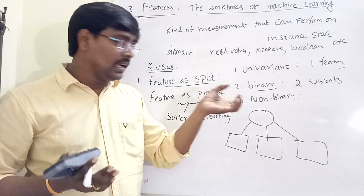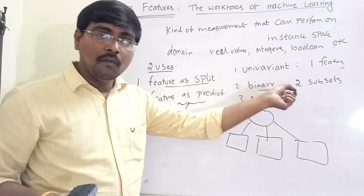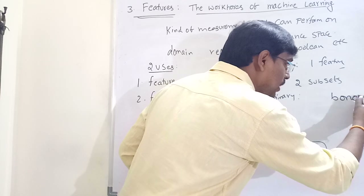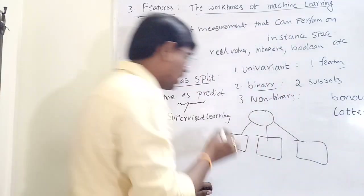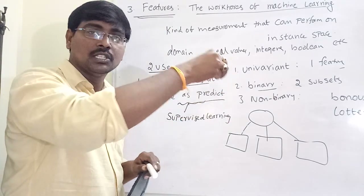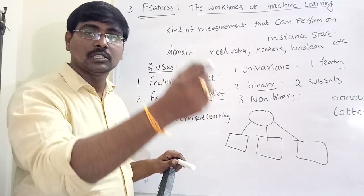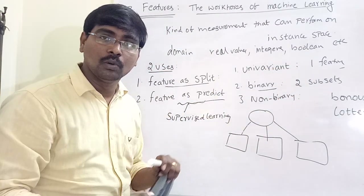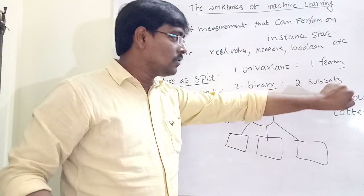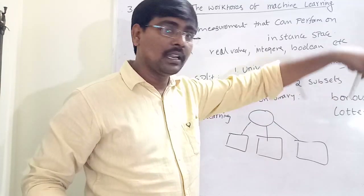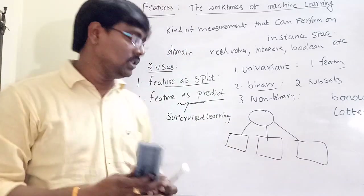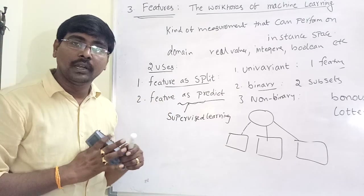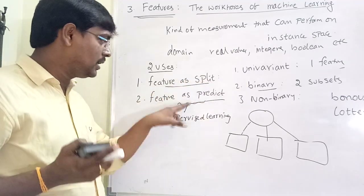Consider a decision tree. In a decision tree, suppose the two features are 'bonus' and 'lottery'. If the value of bonus is equal to 1, we predict that the email is spam. If bonus equals 0 and lottery equals 1, we predict spam. If both bonus and lottery equal 0, we predict ham. So features are used to predict the target class. The two main uses are features as split and features as predict.